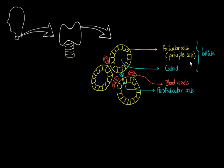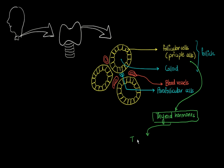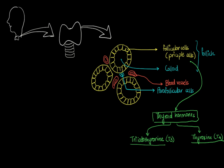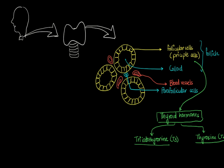The follicular cells, or principal cells, are responsible for the production of thyroid hormones, which are of two main types. One contains three iodine and is called triiodothyronine, or T3. The other is thyroxine, or T4, which contains four iodine.